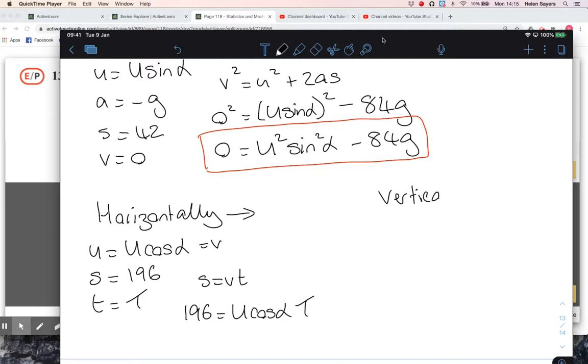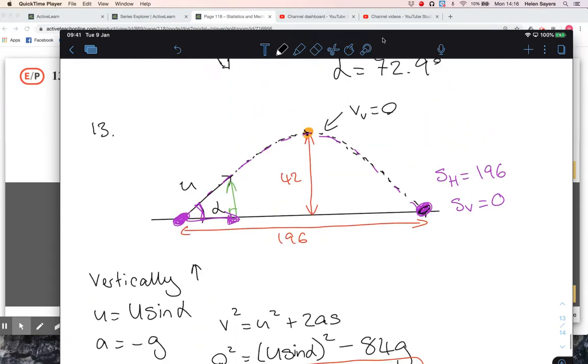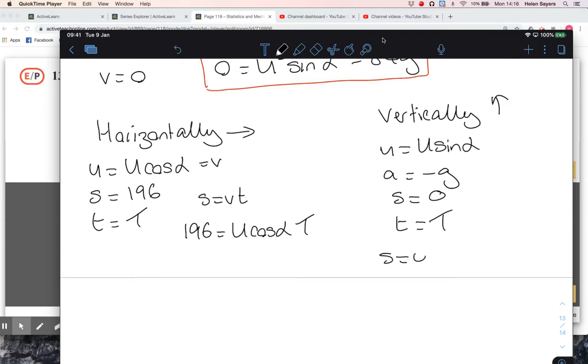Let's think vertically at that same point. Its initial vertical velocity is u sine alpha, taking up as positive. Its acceleration is minus g, gravity is working downwards. Its displacement is zero, coming back to the ground where it started from. I'm calling capital T at that point when it hits the ground. I'm going to use S equals ut plus a half at squared. So zero equals u sine alpha times T minus a half g times T squared.